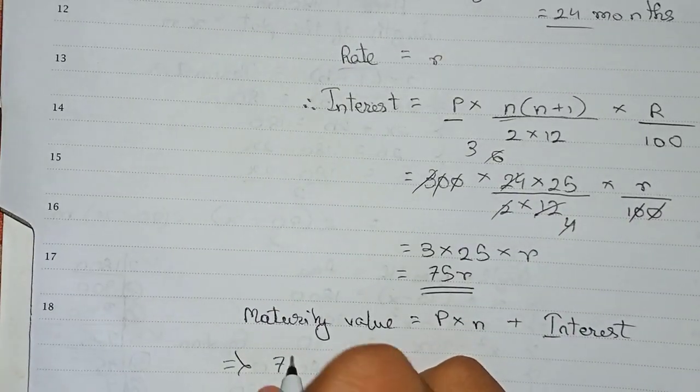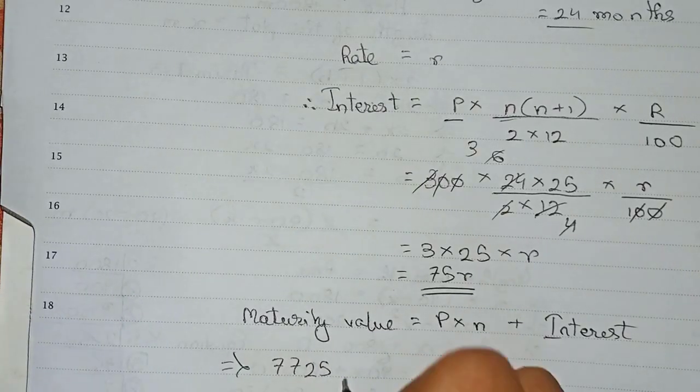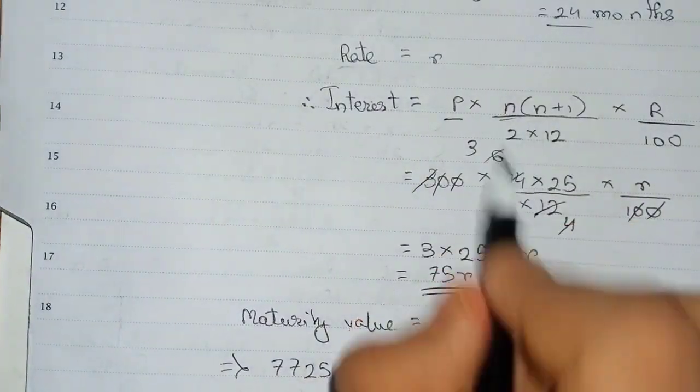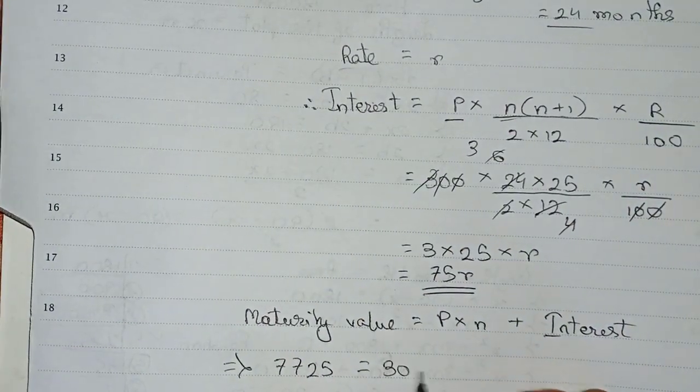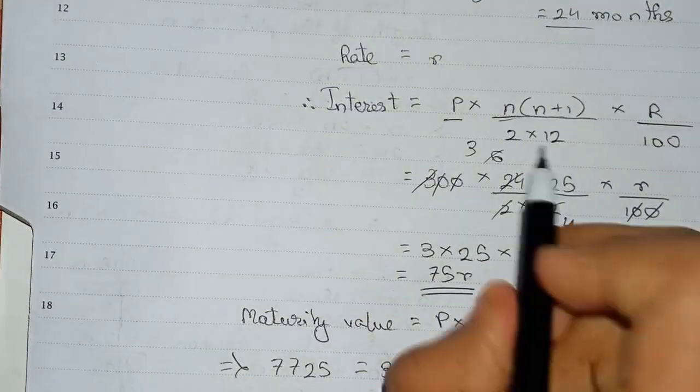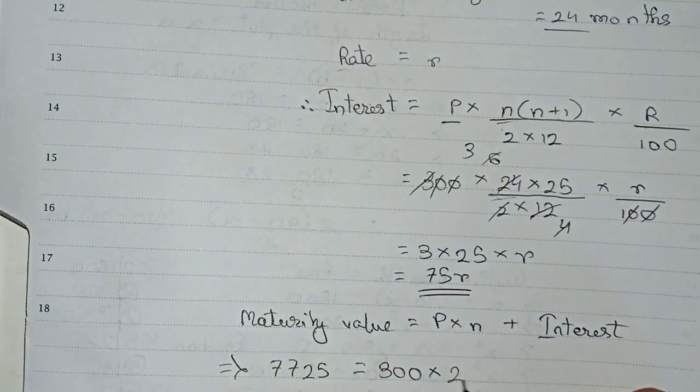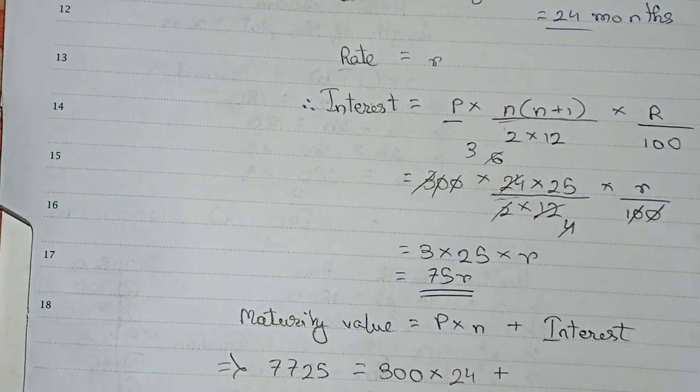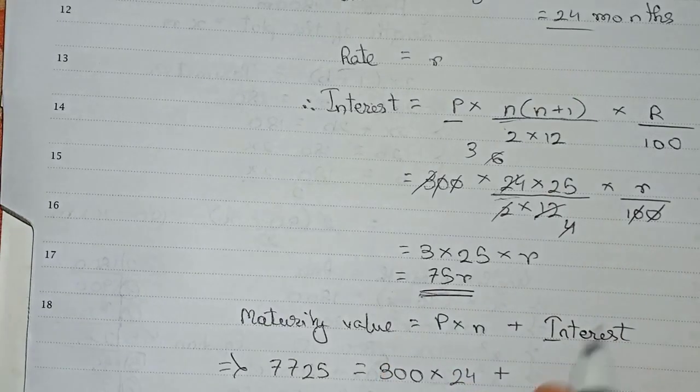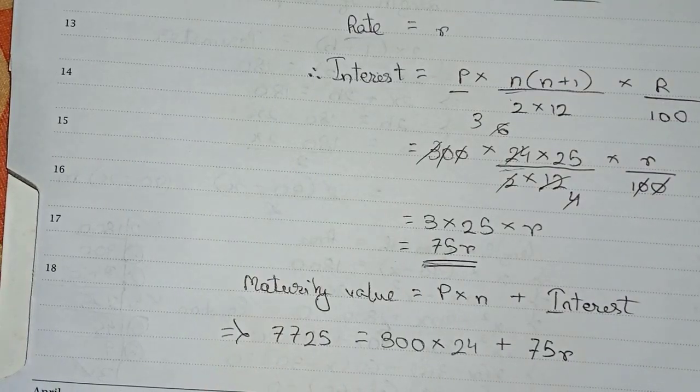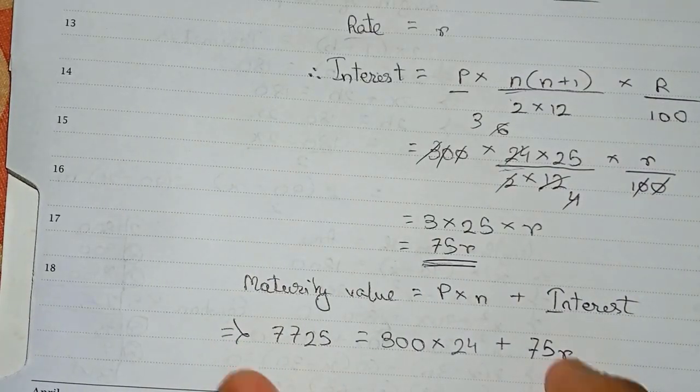Maturity value in the question is mentioned as 7725, is equal to principal. So principal is 300 into n, so n is 24, plus our interest. Our interest is 75r.